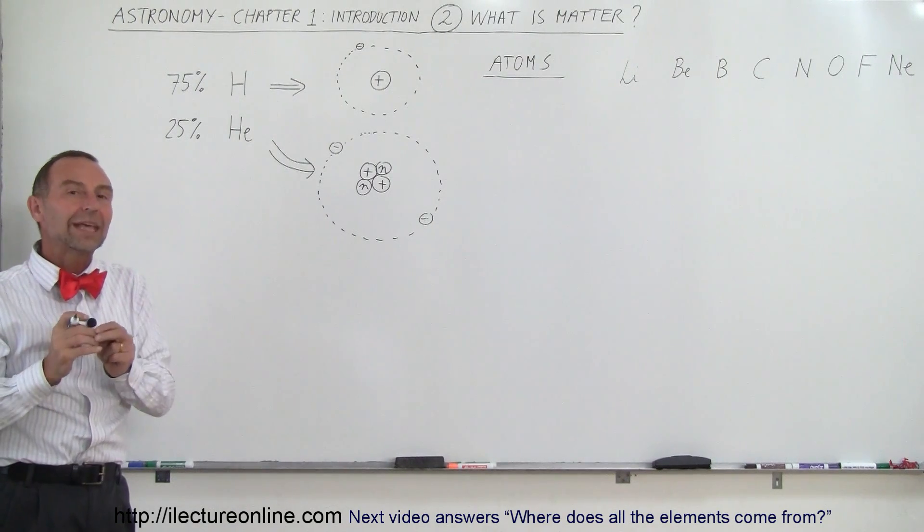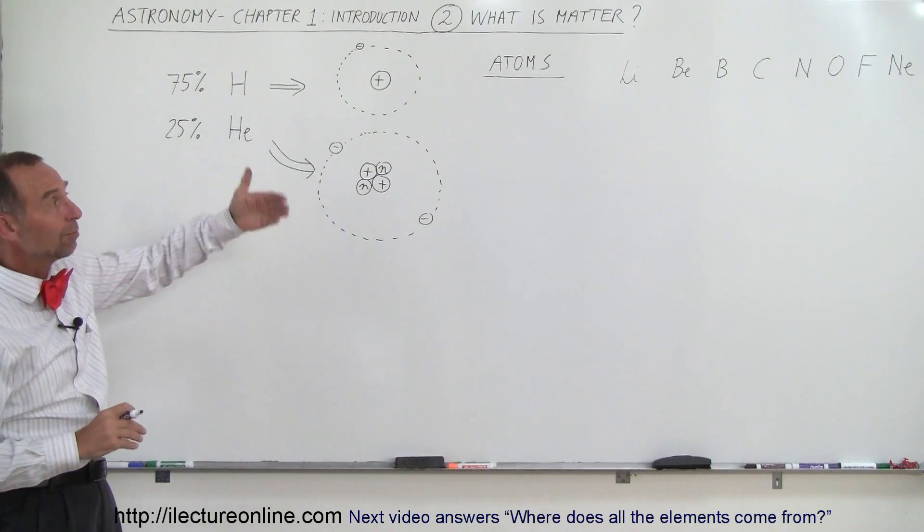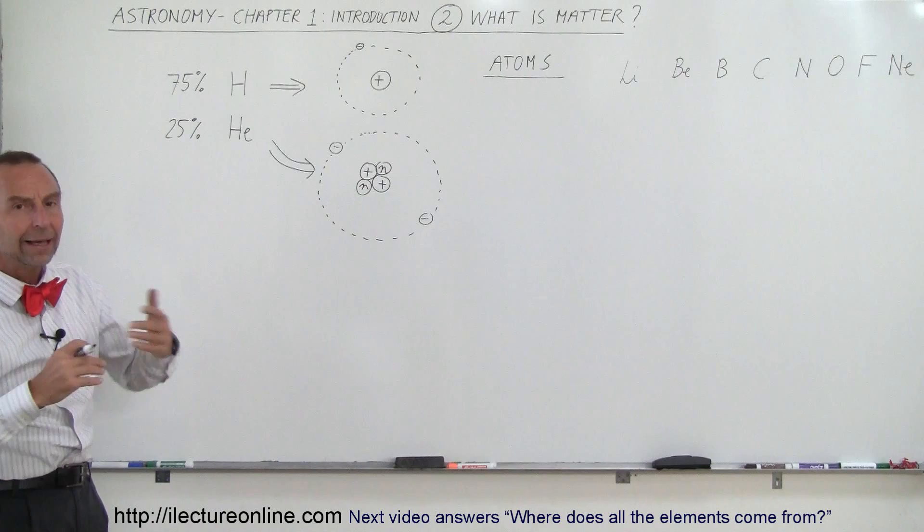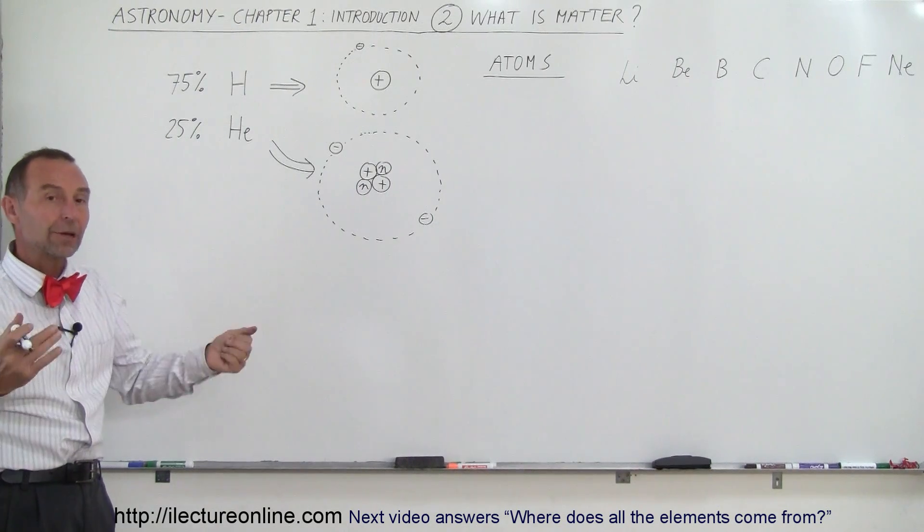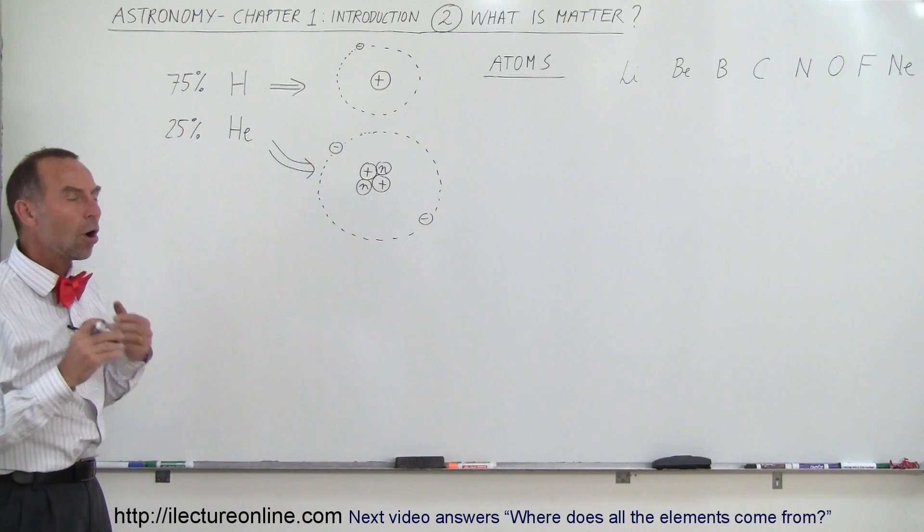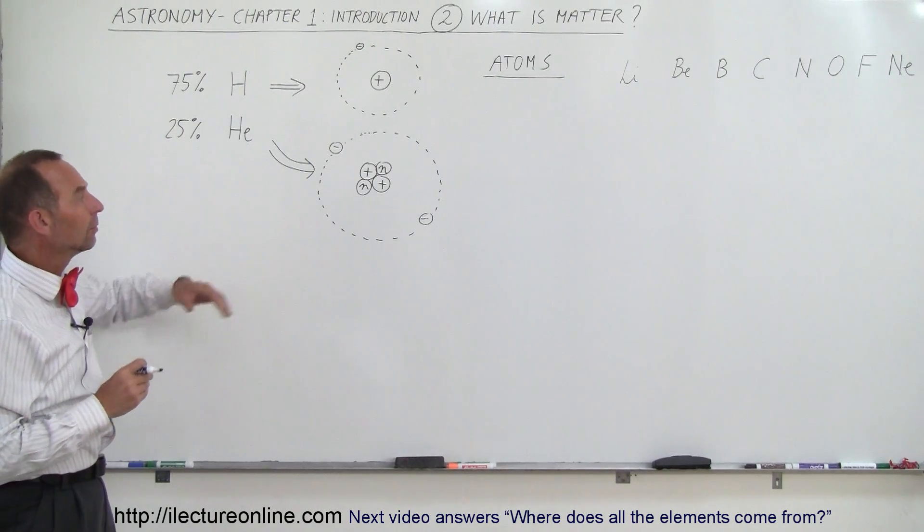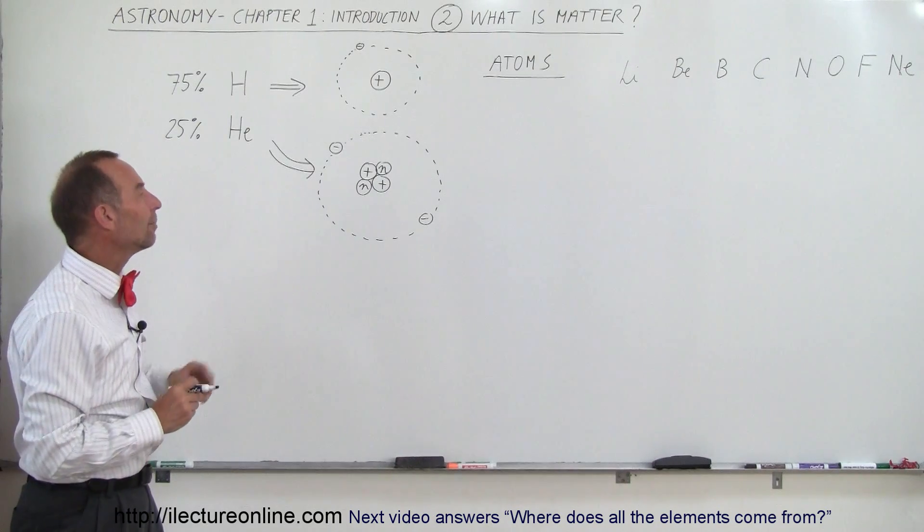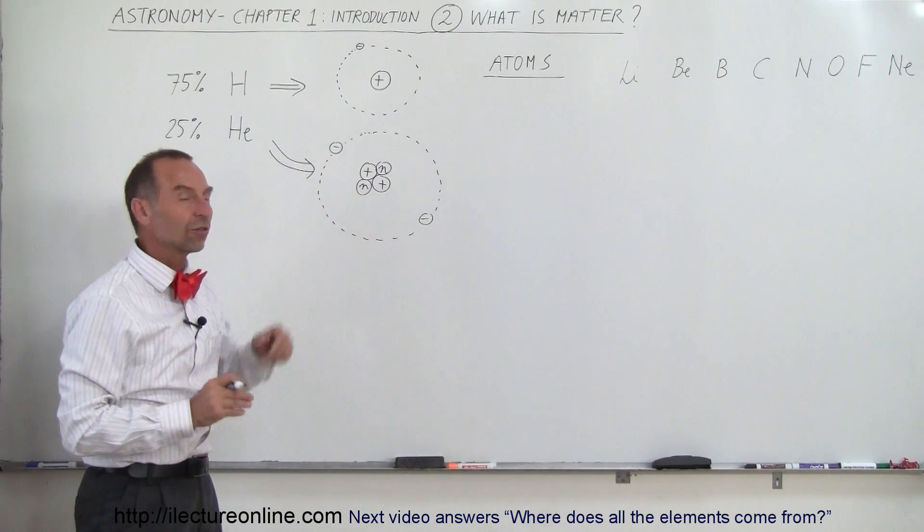The other 1% is everything else on the periodic table such as lithium, beryllium, boron, carbon, nitrogen, oxygen, fluorine and neon and so forth. If you open up a periodic table, look at it, there's over 100 elements on that periodic table. All made up of nuclei, something that makes up the nucleus of each atom and electrons which go around the nucleus.